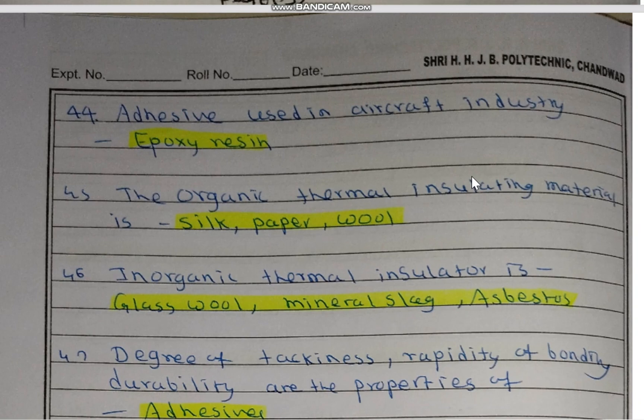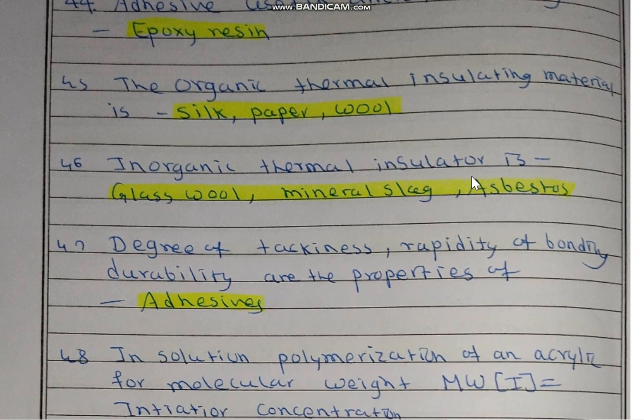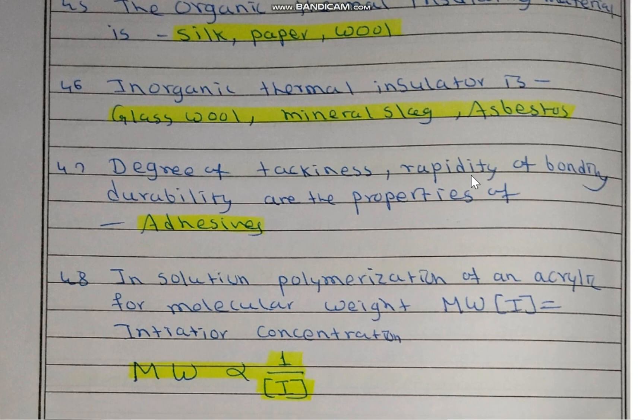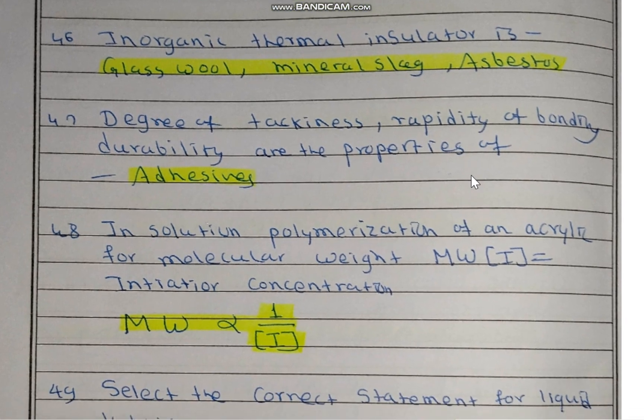Organic thermal insulating materials are: silk, paper, wool, and sawdust. Inorganic thermal insulators are: glass wool, mineral slag, and asbestos.